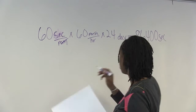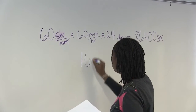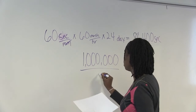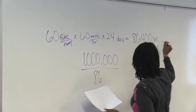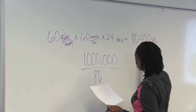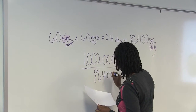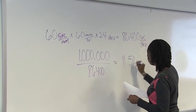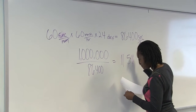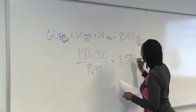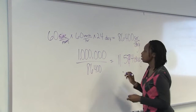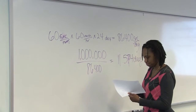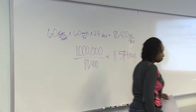From there I said, okay, so that's how many seconds are in a day. So if I take 1 million and divide it by the number of seconds in a day, I got 11.574 days. So for a million seconds to go by, it takes 11.57 days.